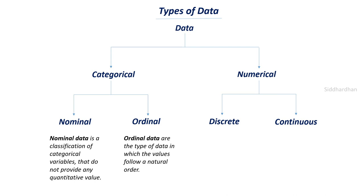Ordinal data is the type where values follow a natural order. This is also categorical data but the classes have significance. For example, a smartphone review: the phone can be rated as bad, good, or very good. Bad means not good at all, good means average, very good means easy and pleasant to use. There is a natural order — bad, good, very good — and each category has significance, unlike nominal data.